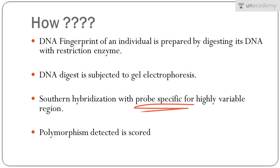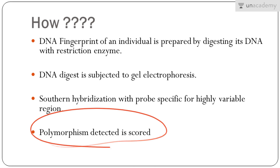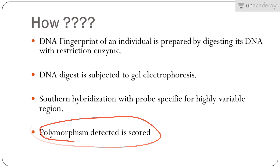After binding of the probe, the polymorphism is detected and scored. Based on the binding of the probe at various locations and the differences in the binding pattern between two individuals, any polymorphism present is identified and scored for distinguishing or identifying the two individuals from each other.